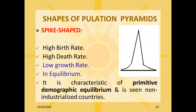There are different shapes of population pyramids. The first shape is the spike shape. This pyramid shows high birth rate and high death rate, resulting in low growth rate. The country will be in equilibrium because high birth rate cancels the high death rate. It is characteristic of primitive demographic equilibrium and is seen in non-industrialized countries like Kenya.